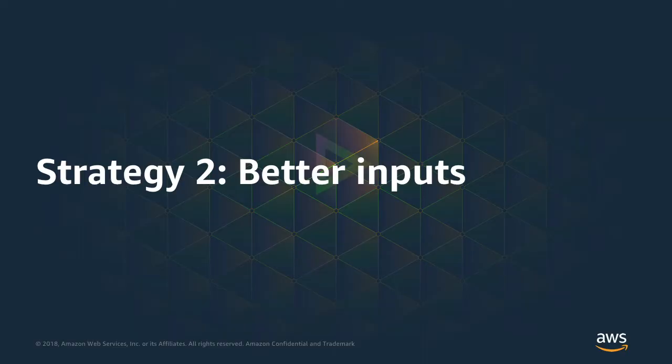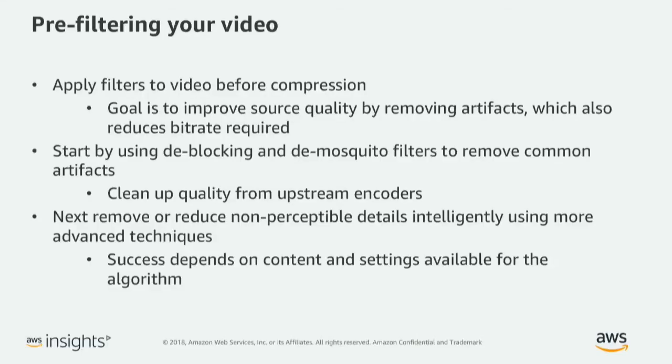Now we're going to talk about our second strategy: better inputs. By focusing on the input of the process, what we really mean is focusing on pre-filtering. It's important in video encoding to focus on pre-filtering because there's work you can do at the front end that gives the encoder a better set of frames to work on. Elemental Live and Elemental Media Live offer these features, and it's important to understand them and know how to apply them to your video in order to realize savings.